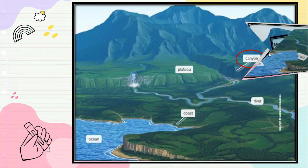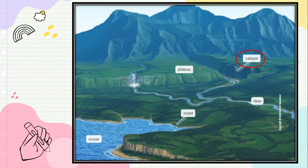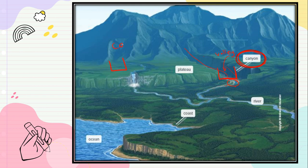A canyon is when a river cuts through a mountain. Because it cuts the mountain, it makes the valley a U-shape. When the land between mountains makes a U-shape, we call it a canyon. So: U-shape = canyon.